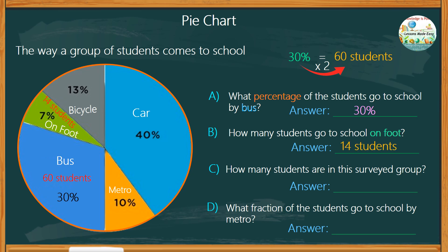We might as well write the number of students for all the other categories. 13% of them go to school by bicycle, which makes 26 students. By car, 40%, which is equal to 80 students. And 10% by metro, that makes 20 students.